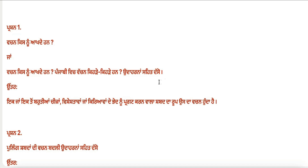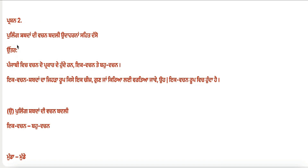The second question is: what is vachan (grammatical number)? Give examples. In Punjabi, vachan is of two types — ek vachan (singular) and bahu vachan (plural). The form of a word that refers to one thing, person, or action is called ek vachan (singular).